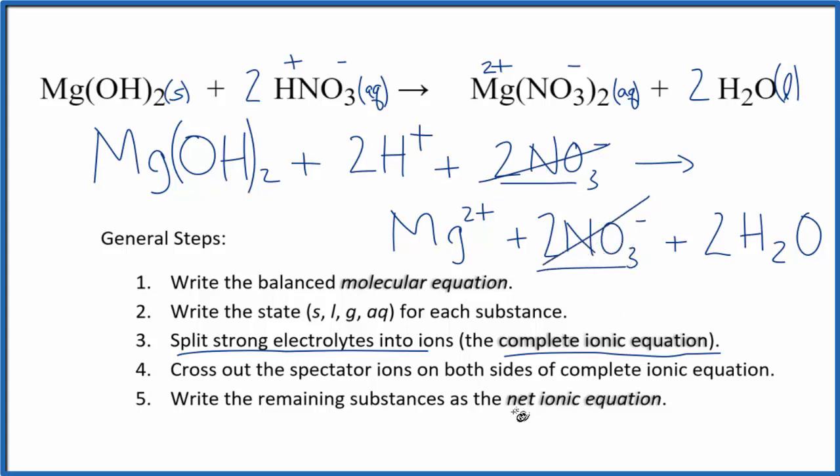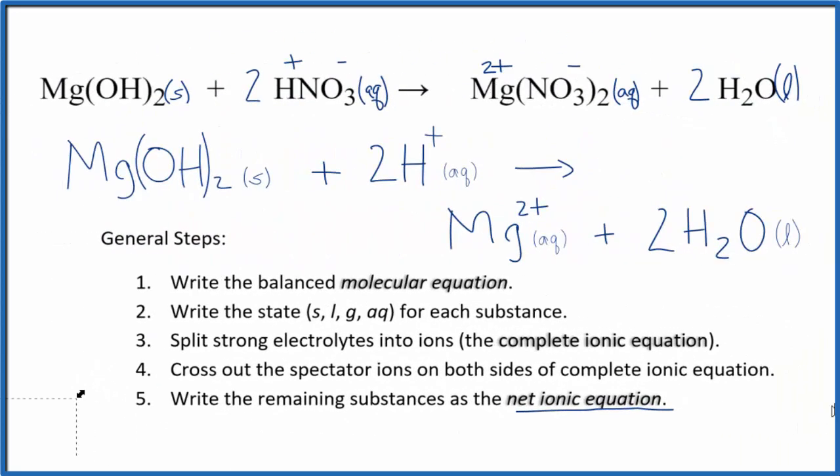What's left is the net ionic equation. Let me clean this up and write the states in and then we'll have a nicely written net ionic equation for Mg(OH)2 plus HNO3. And this is the net ionic equation for Mg(OH)2 plus HNO3. We have our solid magnesium hydroxide, 2 hydrogen ions, the magnesium ion, and 2 water molecules.